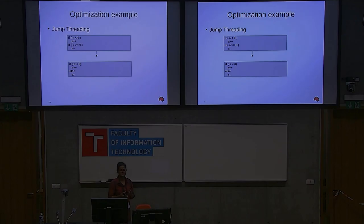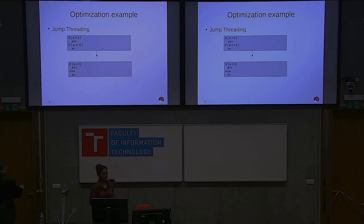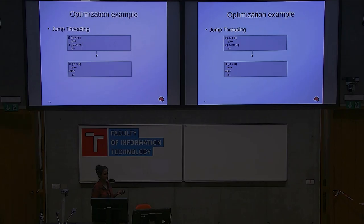Then we have jump threading. If we check a is less than 0 and that comes out to be false, obviously a is going to be greater than or equal to 0, so we don't need a second if operation — it could just be an else statement. These kinds of redundant checks can be avoided. When writing code we miss these things, but you can use compiler optimizers to handle them automatically.